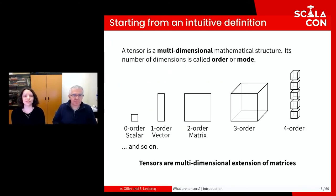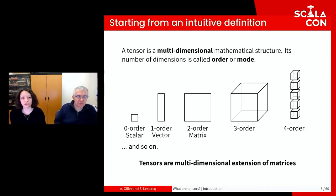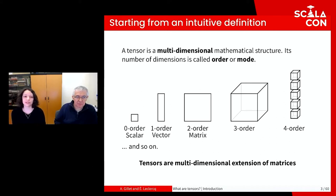We start with an intuitive definition of tensors, a notion introduced at the end of the 19th century. A tensor is a multidimensional structure with strong mathematical properties. The number of dimensions is called order or mode. A zero-order tensor is a scalar, a one-order tensor is a vector, a two-order tensor is a matrix, and so on. If a three-order tensor is easy to visualize, higher-order tensors are harder to represent, but a four-order tensor can be seen as a list of three-order tensors. A five-order tensor can be seen as a list of four-order tensors or as a matrix of three-order tensors.